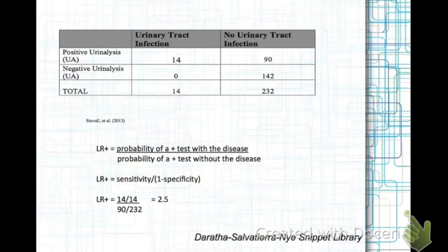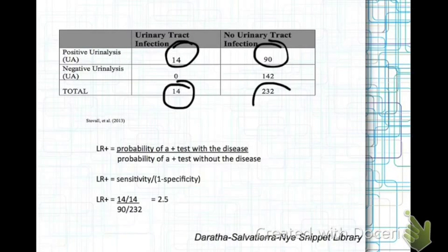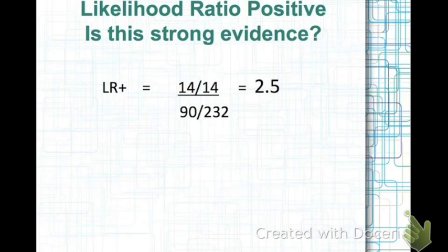To calculate the likelihood ratio positive, you take the patients with a positive urinalysis over the total number of patients with a urinary tract infection, divided by the number of patients with a positive urinalysis over the total of patients without a urinary tract infection. This study allows us to conclude that patients with a urinary tract infection are 2.5 times more likely to have a positive urinalysis than without a urinary tract infection.